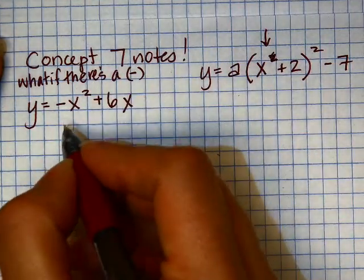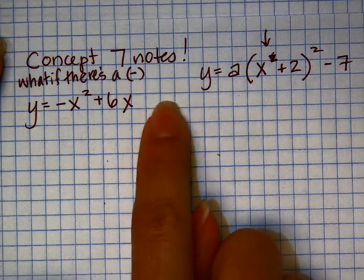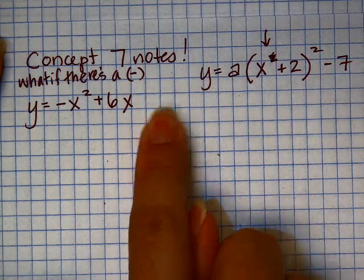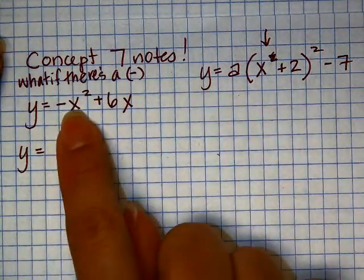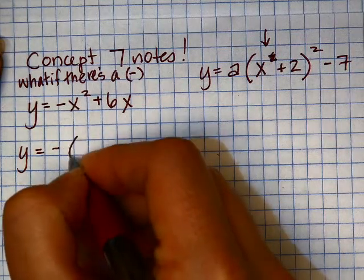So the first thing that we do, actually, is normally if there's a number here, we need to move that first. So that is still the first thing that we do, is move that. There's nothing to move, so we leave it the same. And the second thing we need to do is we need to move that. The only way we can do that is to factor it out.